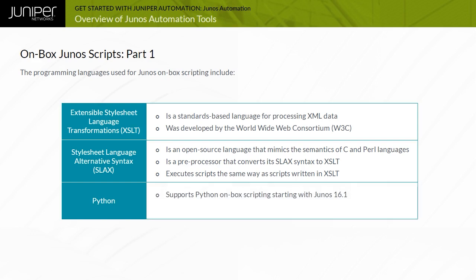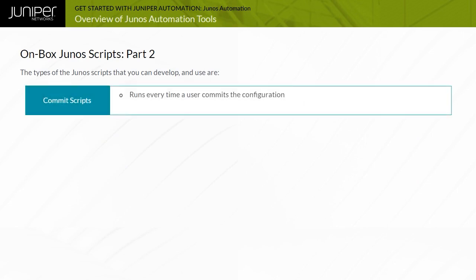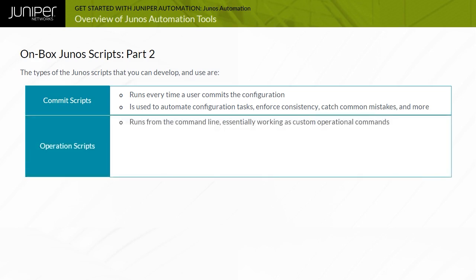The Junos OS supports Python on-box scripting starting with Junos 16.1. This also includes support for the Junos PyEZ library on-box. The types of Junos scripts you can develop and use are: commit scripts that run every time a user commits the configuration. They can be used to automate configuration tasks, enforce consistency, catch common mistakes, and more. Operation scripts can be run from the command line, essentially working as custom operational commands.